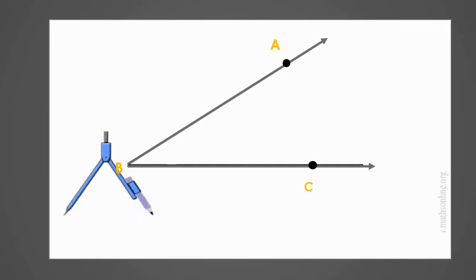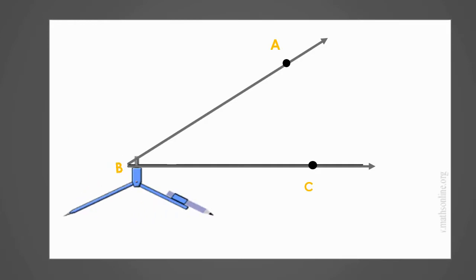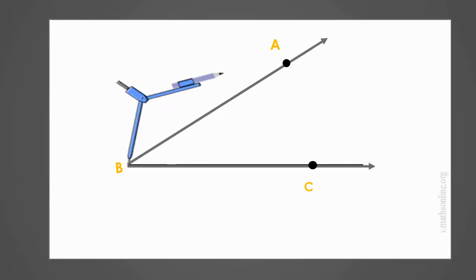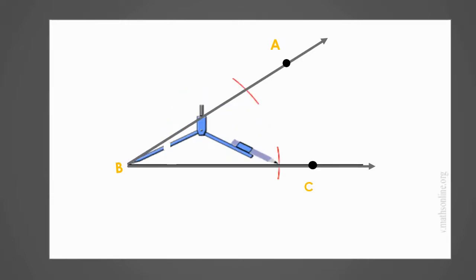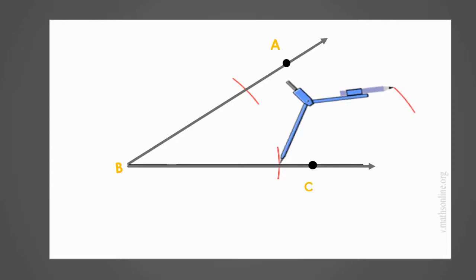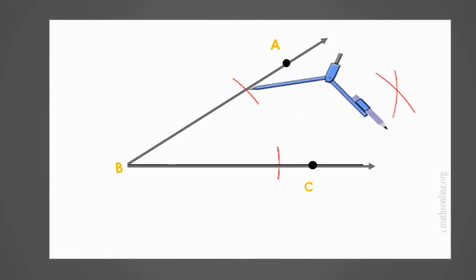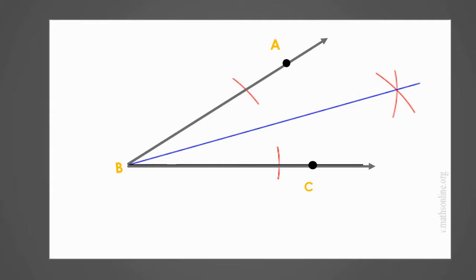Here you can see how we bisect an angle. First, take some measurement on the compass, then put the compass on point B and mark an arc. Keeping the same compass setting, place the point on the compass where each arc crosses the line and draw an arc from each position. Now draw a straight line from the vertex of the angle — this line bisects the angle.